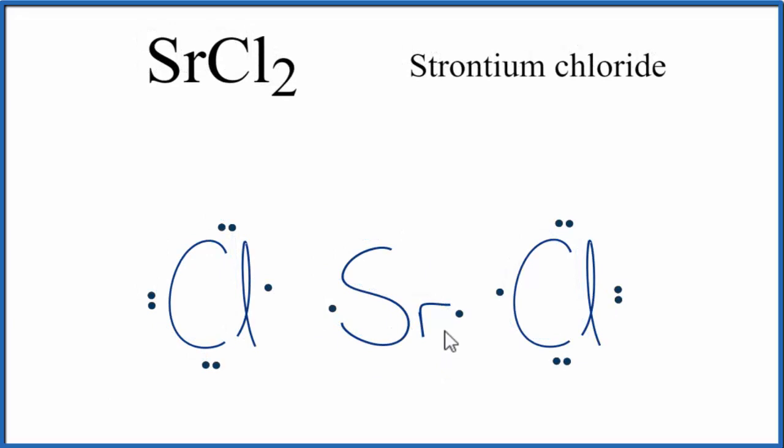So we said strontium, that's the metal, is going to transfer valence electrons to the non-metal. So one goes here, and that completes the octet on this chlorine atom. And the other one goes with this chlorine, and completes its octet.